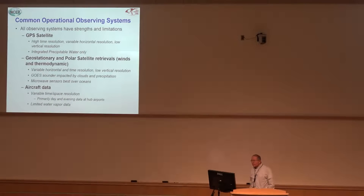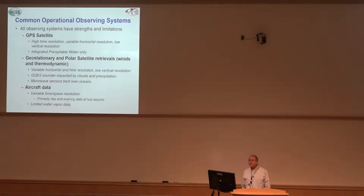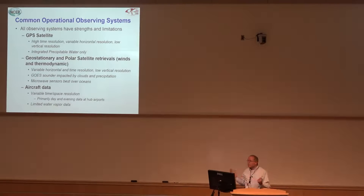GPS satellites can give us high time resolution and variable horizontal coverage, but really poor vertical resolution, and we get integrated precipitable water. That is pretty useful, but how do you take one and a half inches of PW through a deep column and partition it in the vertical? How much is in the low levels, how much in the mid levels? We don't know from that information, so we have some limitations.